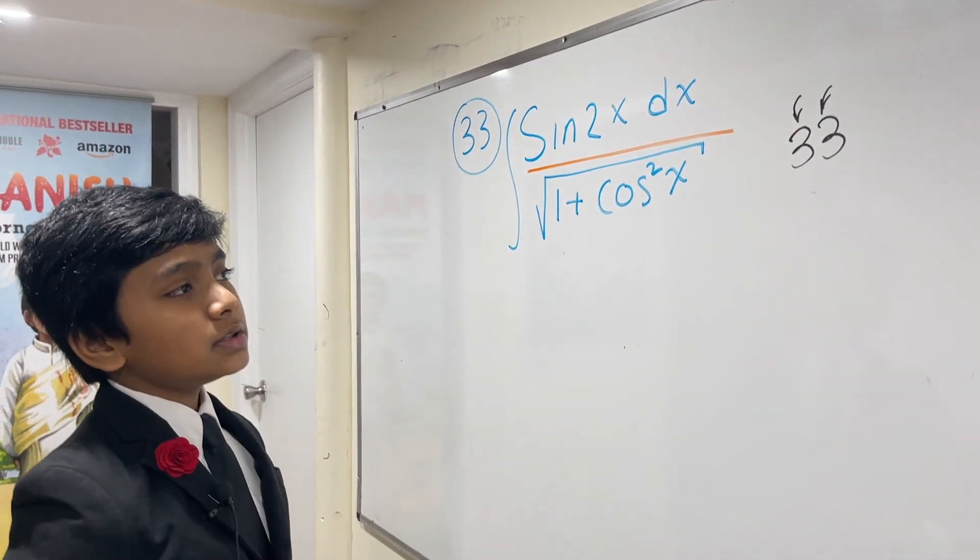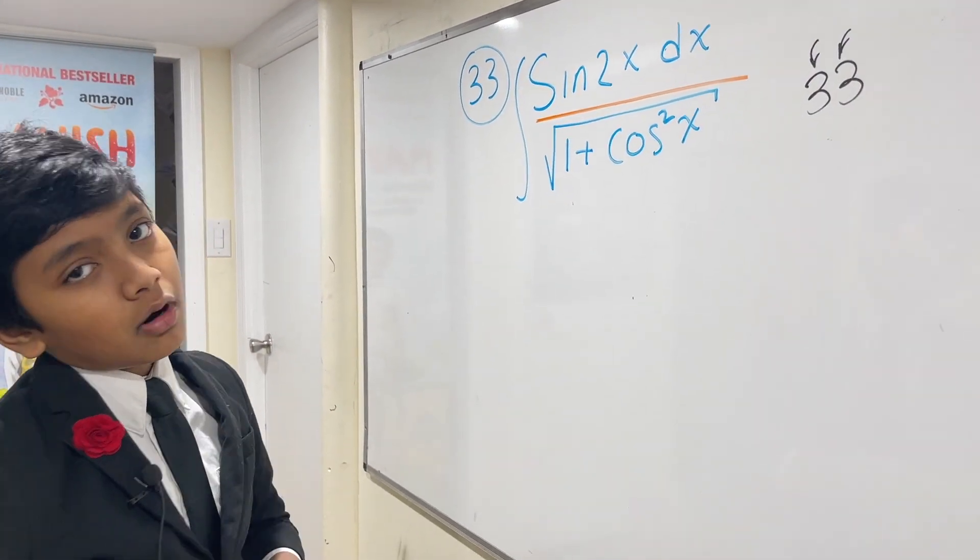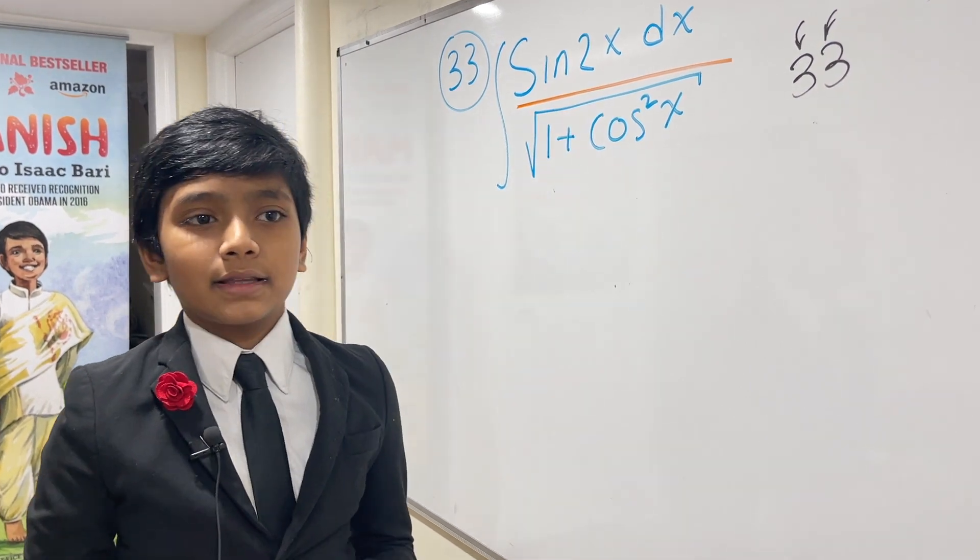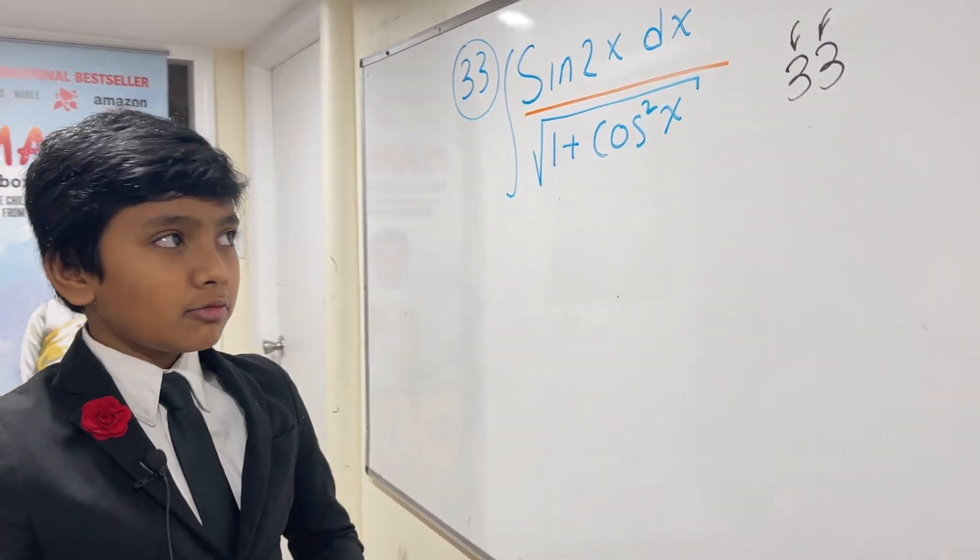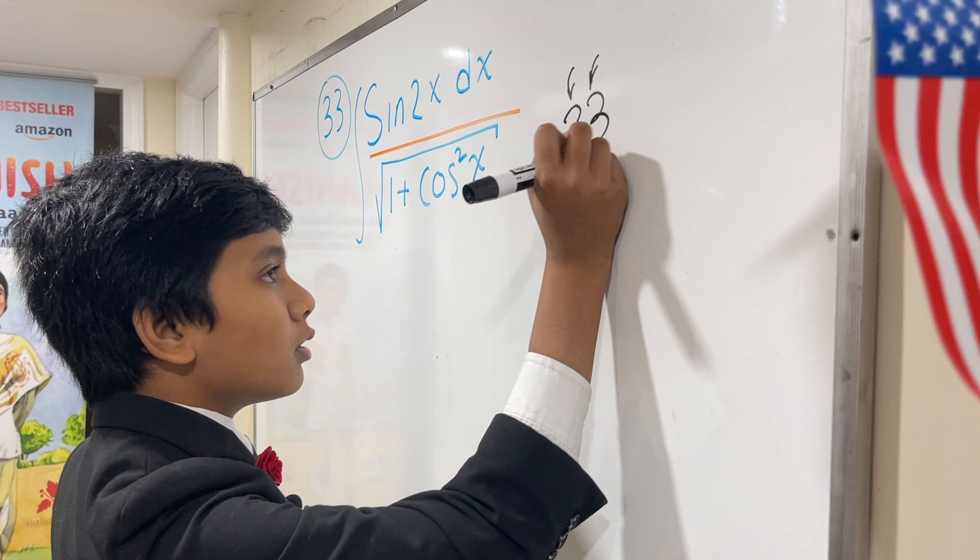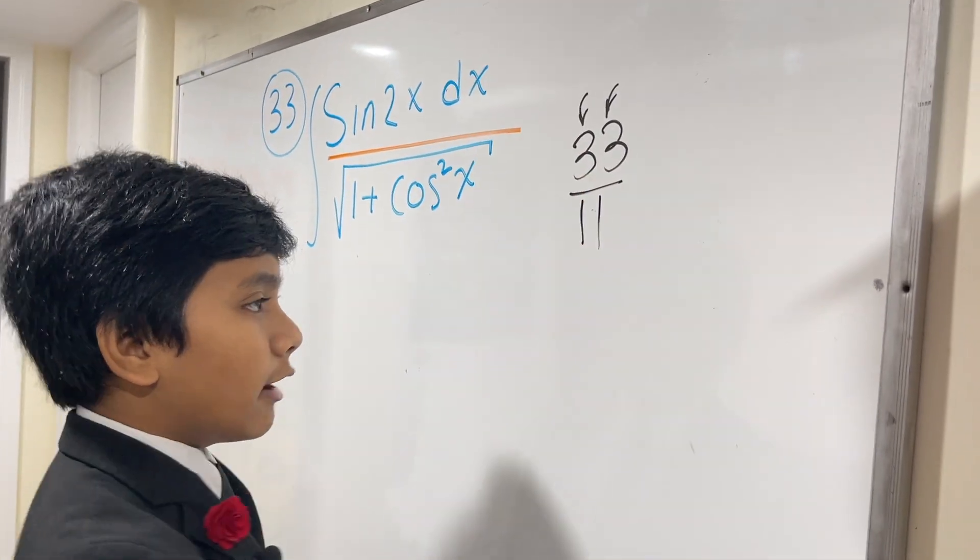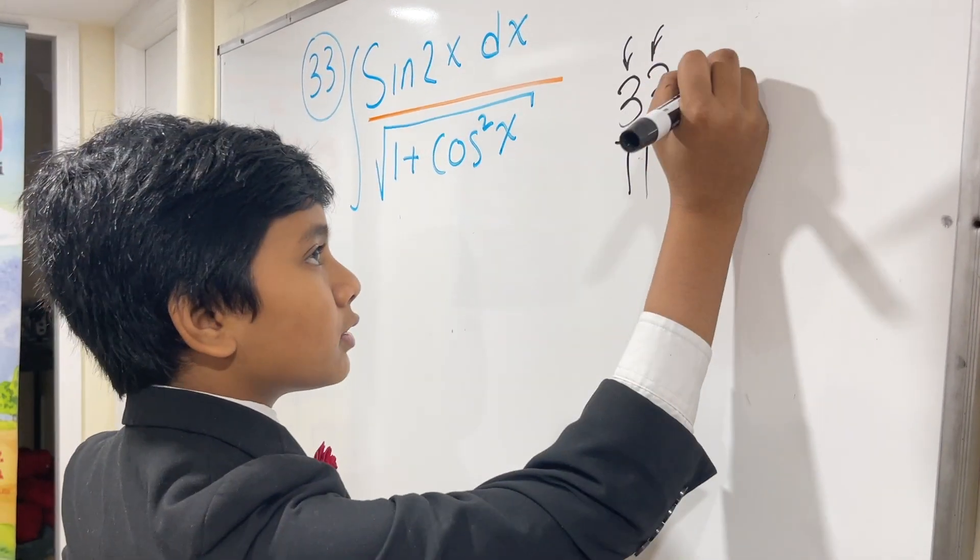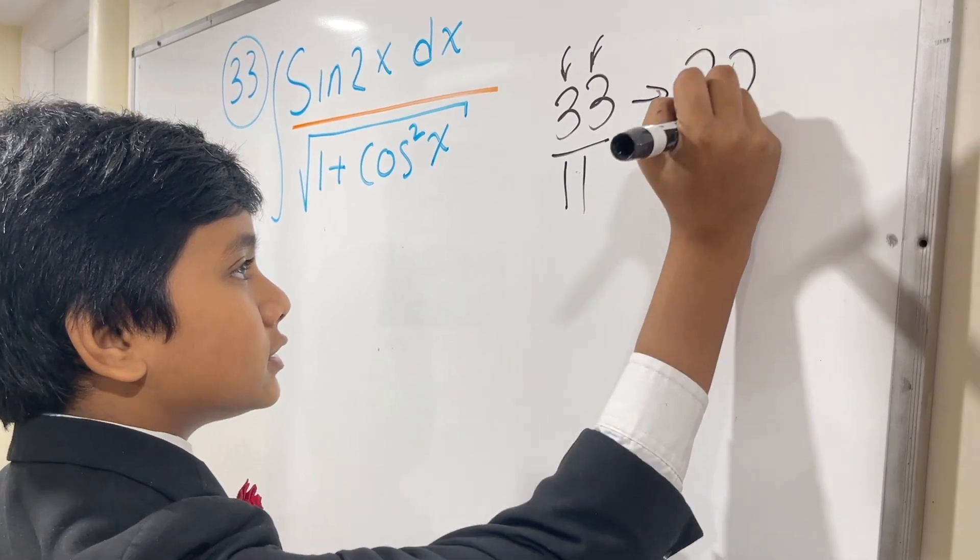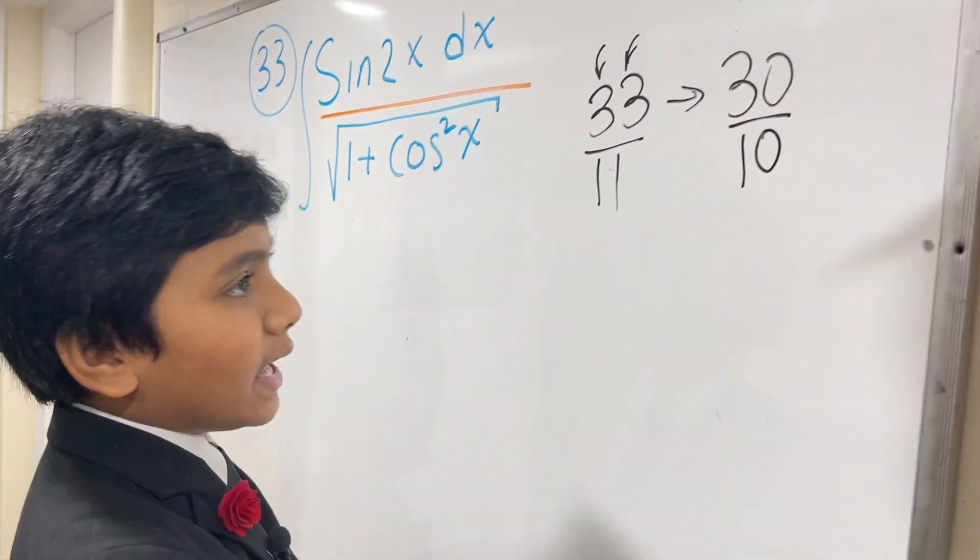It's the smallest odd rep digit that is not prime because 22 is not odd and 11 is prime. 33 is divisible by the amount of primes below it, which is 11. The last number that shares this property is 30, which is divisible by 10.